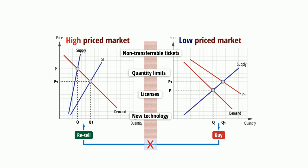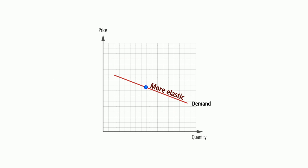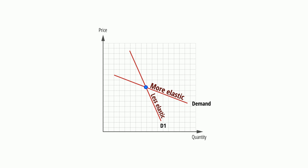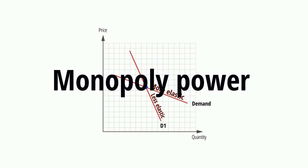For price discrimination to work, different sub-markets must have different price elasticities. Finally, the firm must have some degree of monopoly power — that is, they must be price makers.